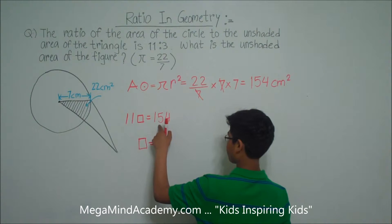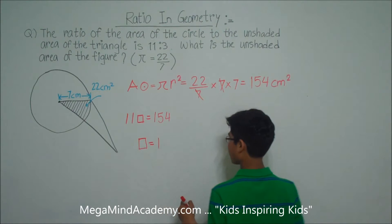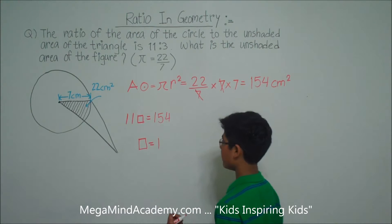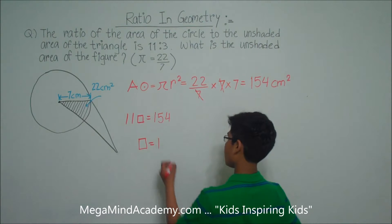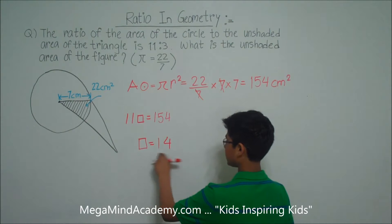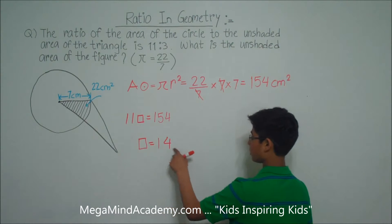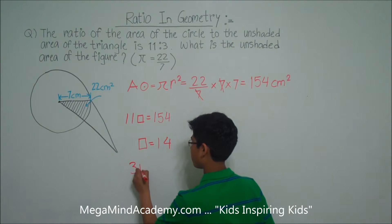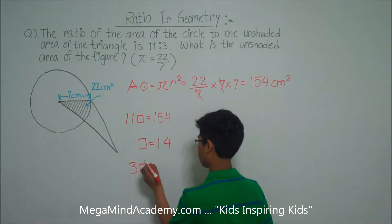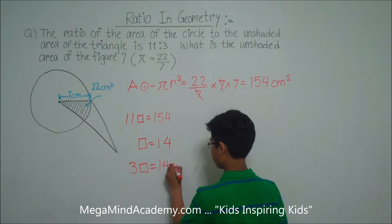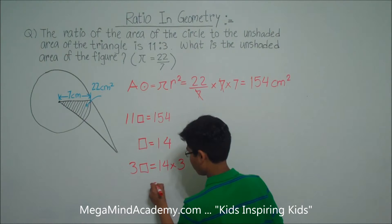11 goes into 15 one time, with a remainder of 4, giving us 44. 11 goes into 44 four times. So 1 unit is equal to 14. This means that 3 units are equal to 14 times 3, which is equal to 42.